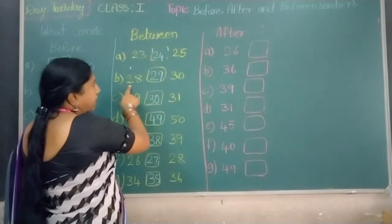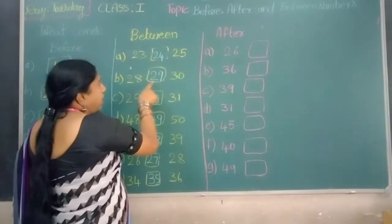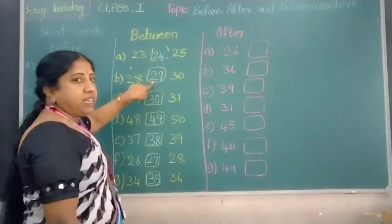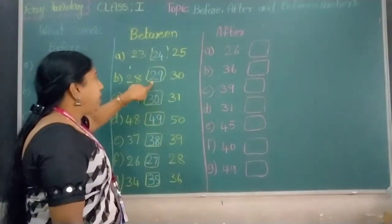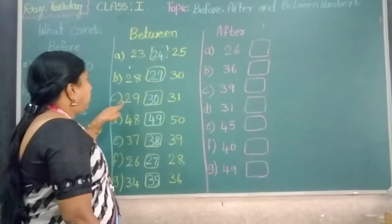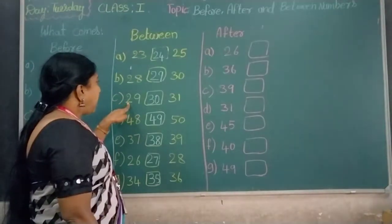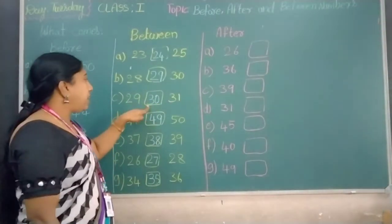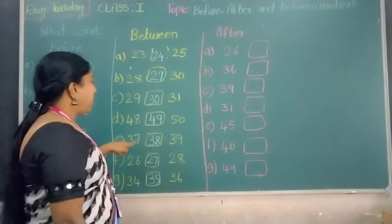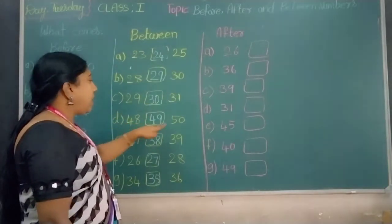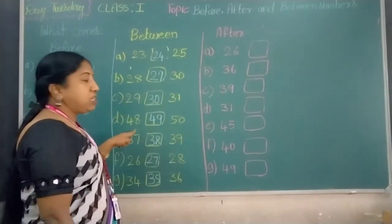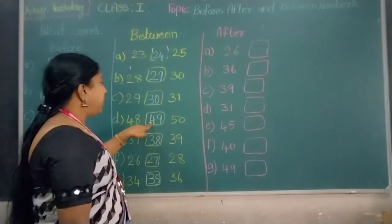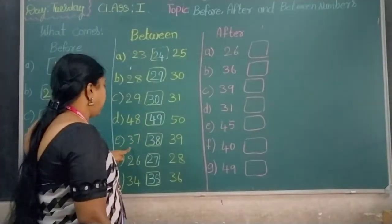28 and 30: which number comes in between? 29, number 29. 29 and 31: which number comes in between? 30. 48 and 50: which number comes in between? Number 49 comes in between.